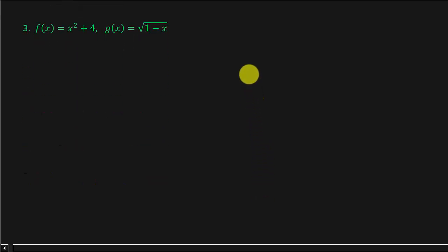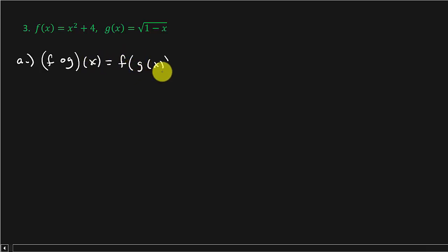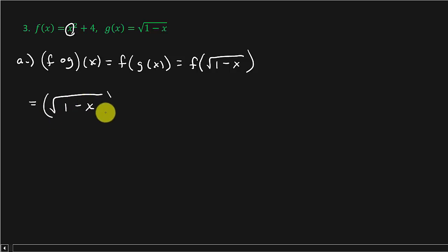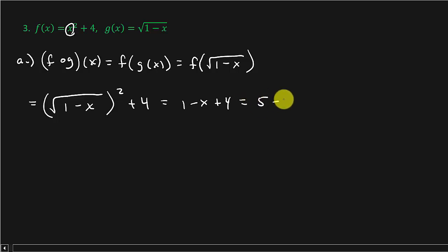Last problem. Let's look at part a. We want f circle g of x, which equals f of g of x, which is f of the square root of 1 minus x. g of x is square root of 1 minus x, so we take the square root of 1 minus x and put it in the place of x. This gives us the square root of 1 minus x, that quantity squared, plus 4. This equals 1 minus x plus 4, which equals 5 minus x. There's your answer to part a.